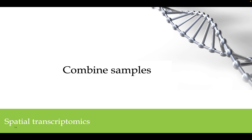In this video, we will cover how to combine multiple samples. After having normalized the samples, we need to combine them before running joint dimensional reduction and clustering. There are two methods available in Chipster for this: merge and integration.